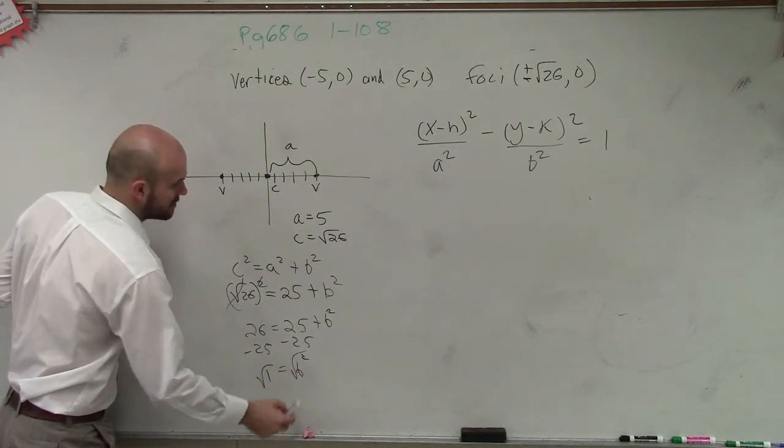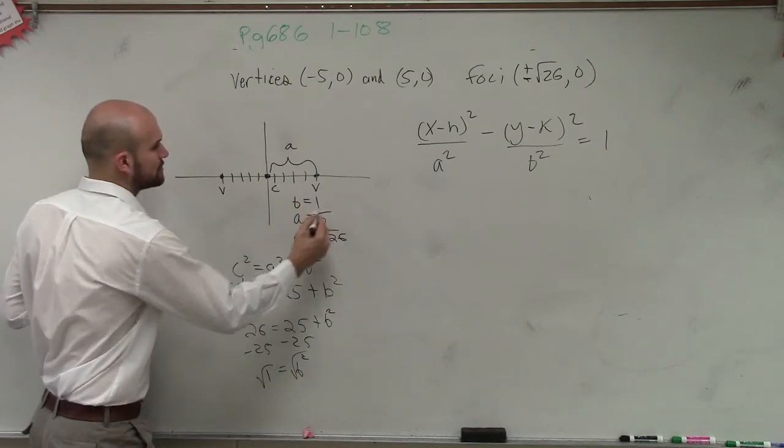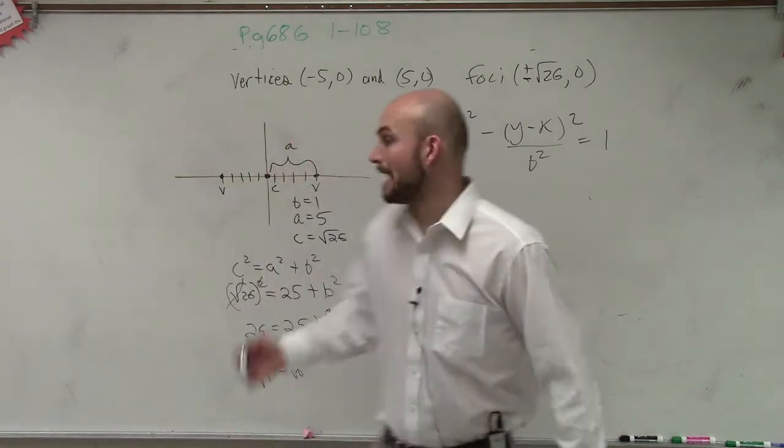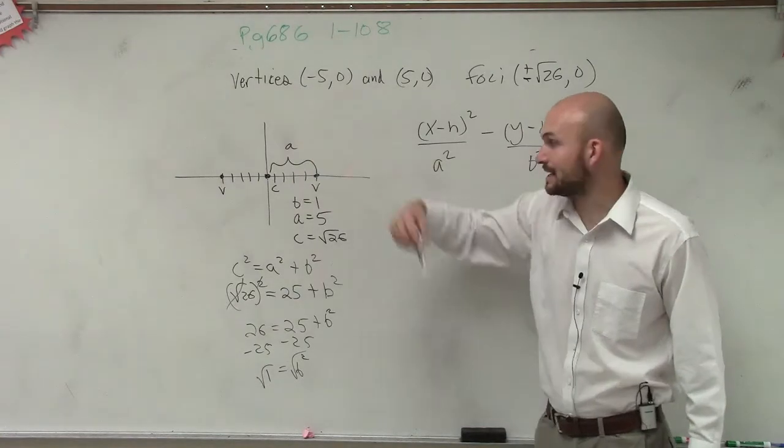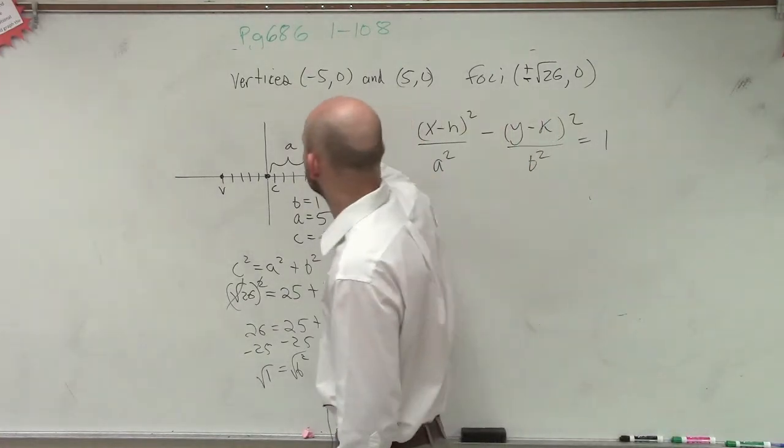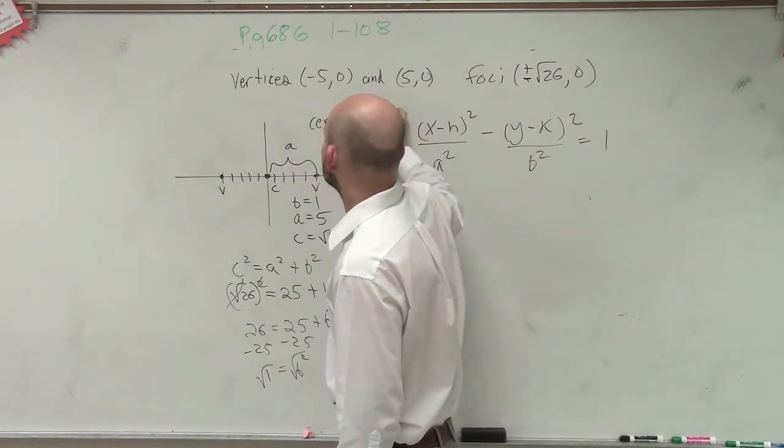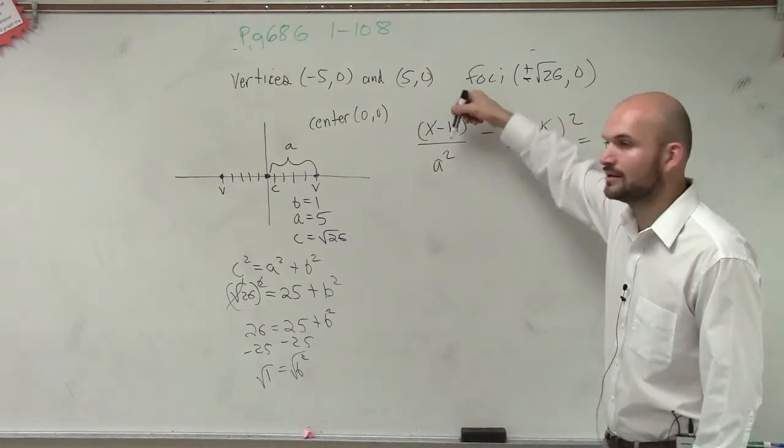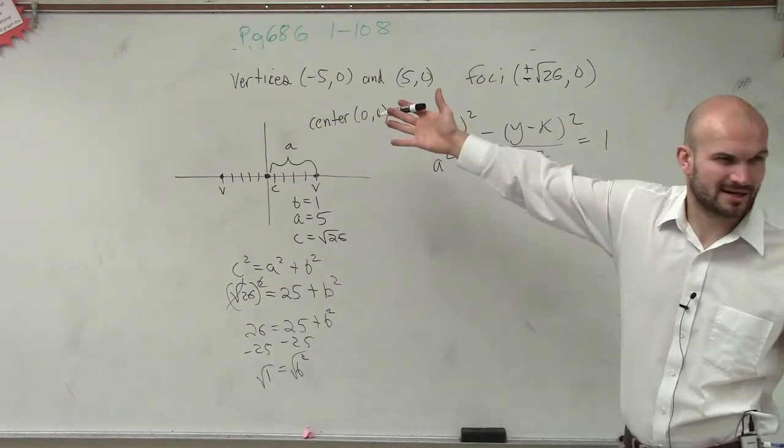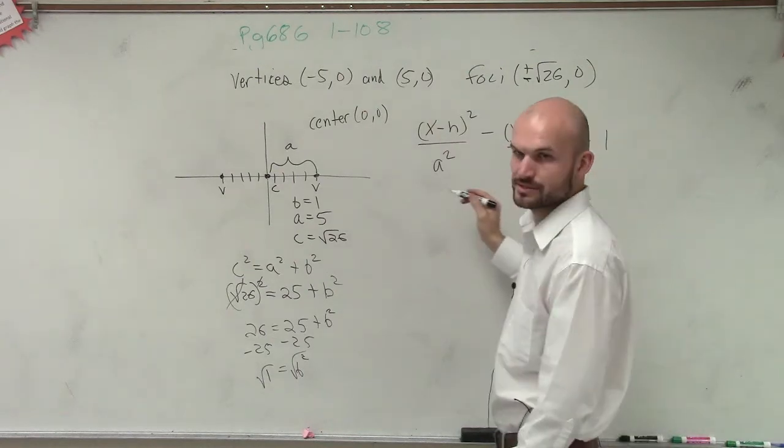Take the square root. So therefore, we now know b equals 1. So now I know what b is. I know what a is. And we can determine our center is 0 comma 0. So to write the equation, I don't need to write x minus 0, right? Can I just write x squared, please?